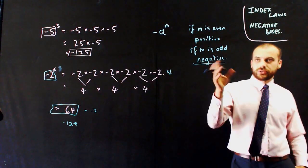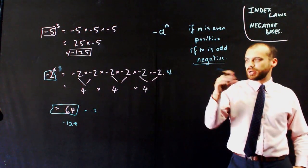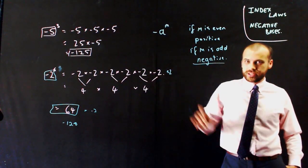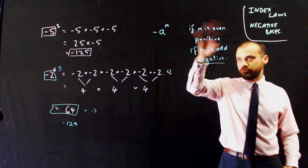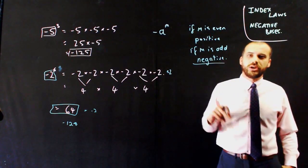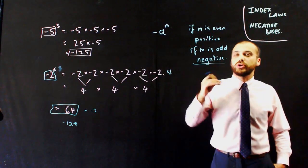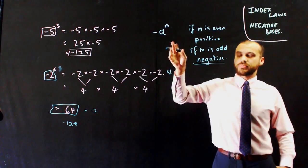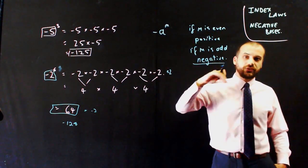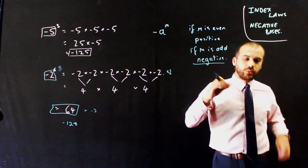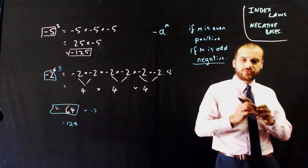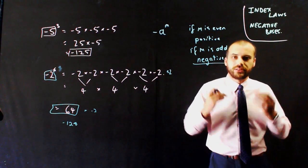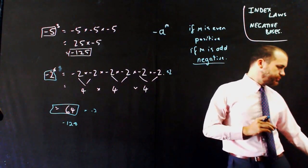Learn the rule, but also try to understand it. Because if you get stuck and you don't remember the rule, you can just work through it — negative 5 times negative 5 times negative 5 — and figure out whether the resulting answer will be positive or negative.